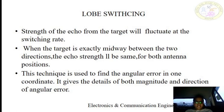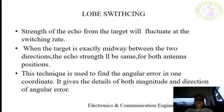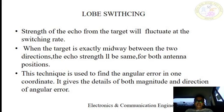The sign of the difference determines the direction the antenna must be moved in order to align the switching axis with the direction of the target. When the voltages in the two switched positions are equal, the target is on the axis and its position may be determined from the axis. The advantages of lobe switching or sequential scanning are that the target position accuracy can be better than the size of the antenna beam width. Lobe switching is used in airborne interception radar and also in ground-based anti-aircraft fire control radars.